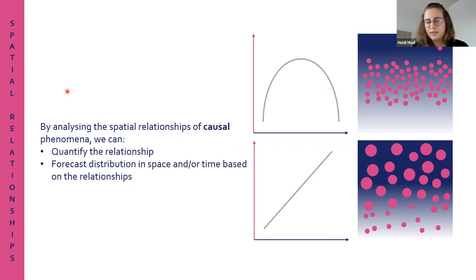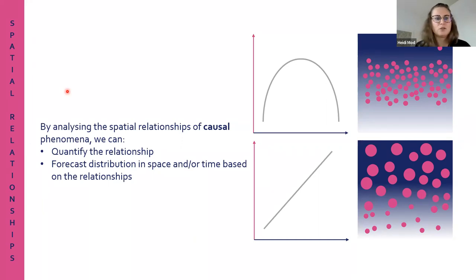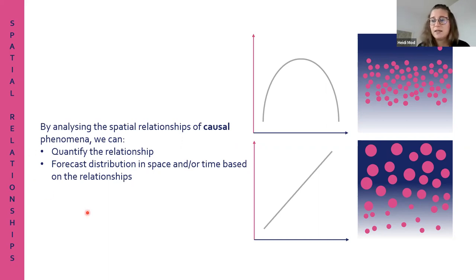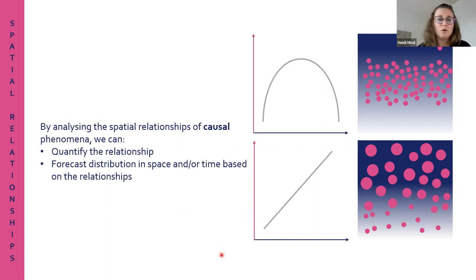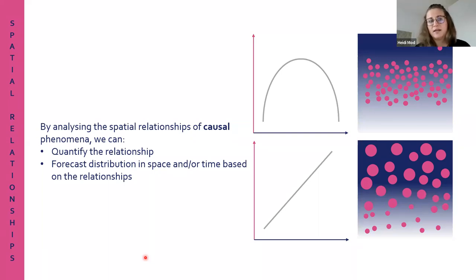A lot of it is based on what we already know. From ecological theory, we know that vegetation is affected by temperature, precipitation, or soil nutrients. Using spatial modeling to look at these spatial relationships, we can quantify the relationships in more detail, identify the most influential predictors, or compare the relative influence of different predictors. We can also look at the nature of relationships - whether they are positive, negative, or hump-shaped.